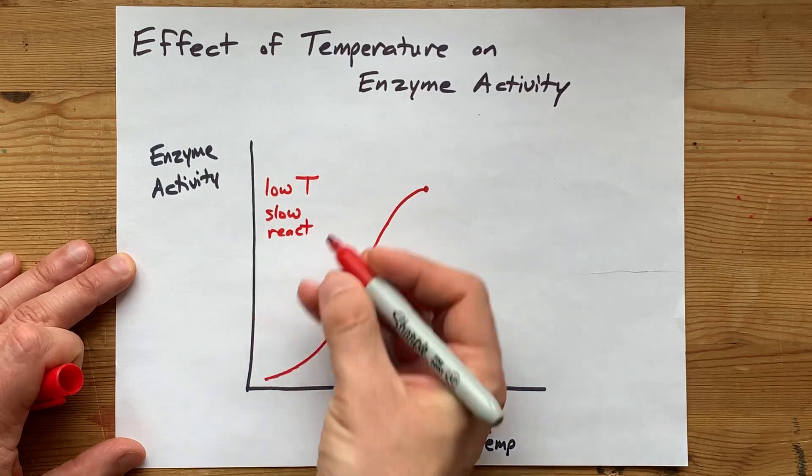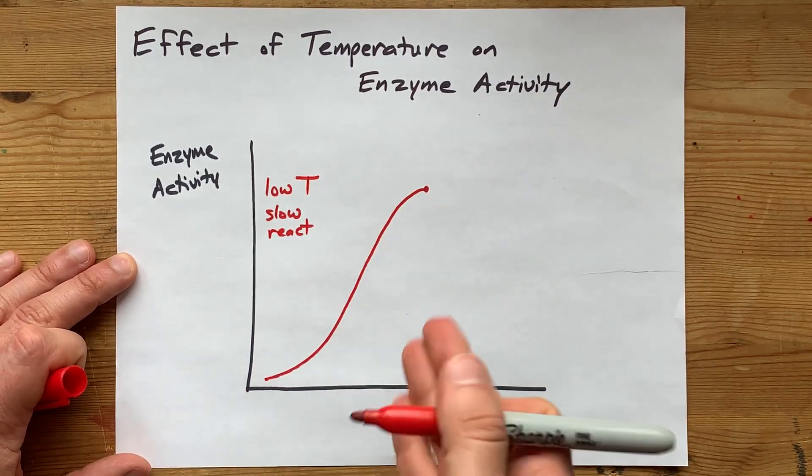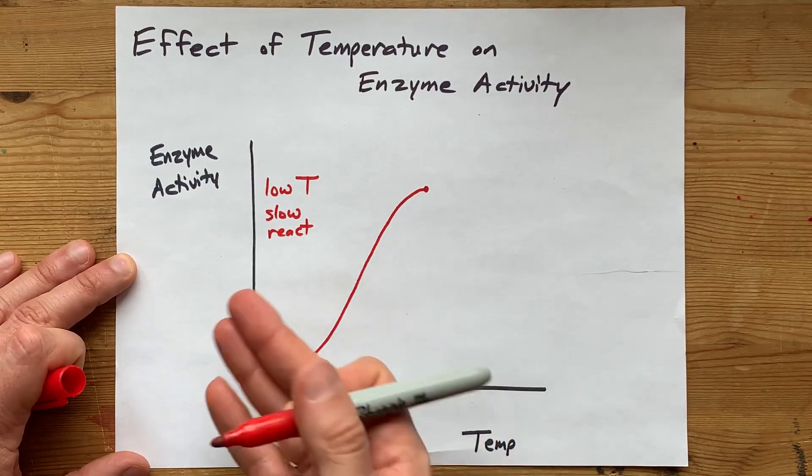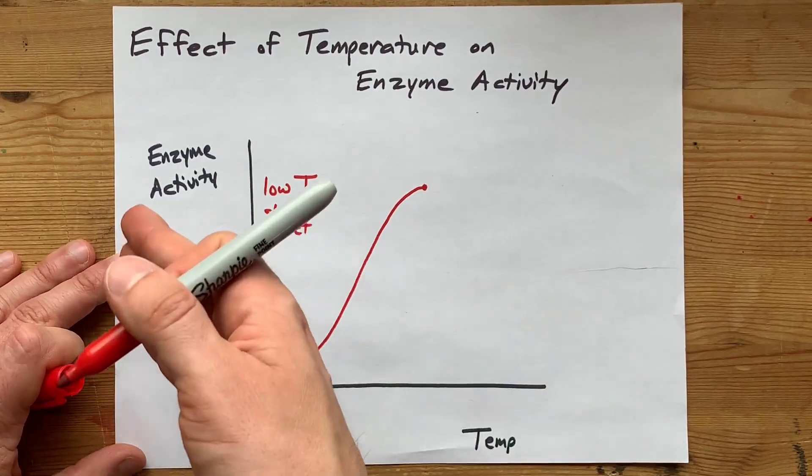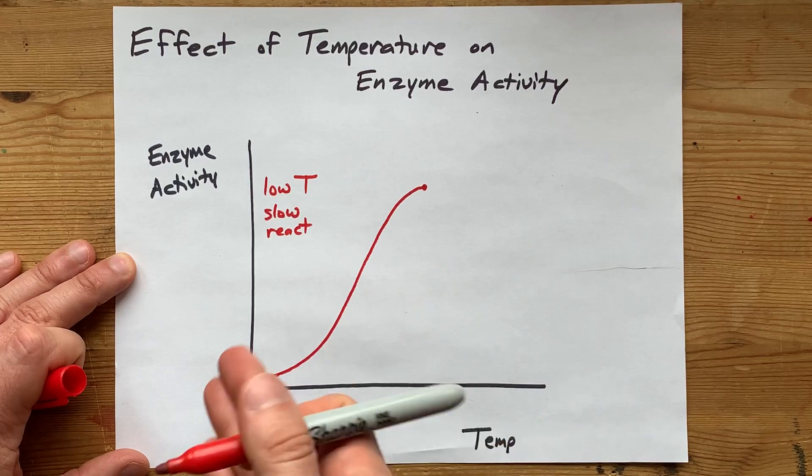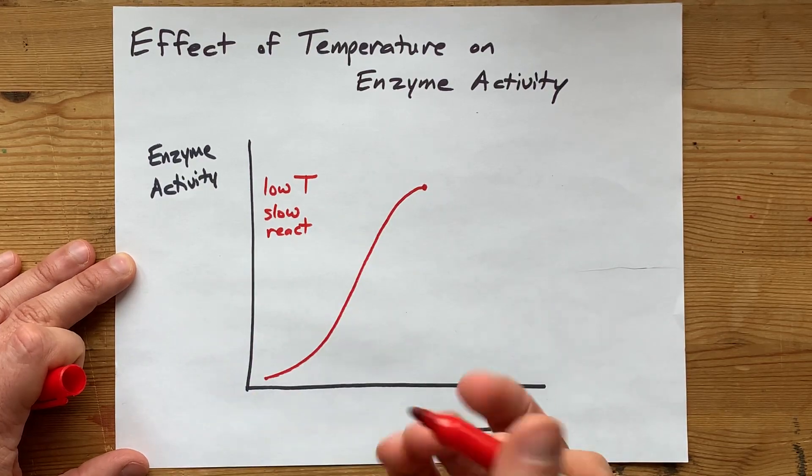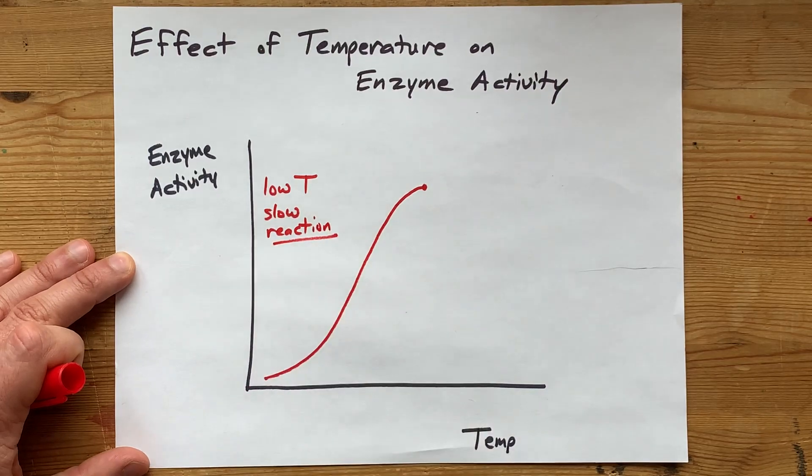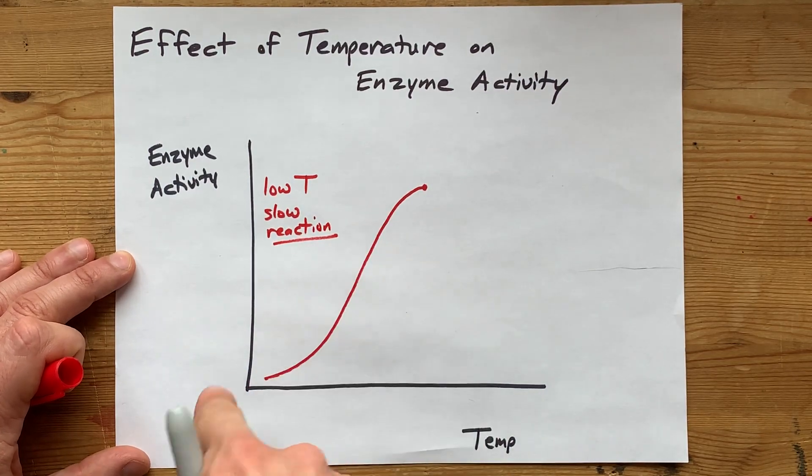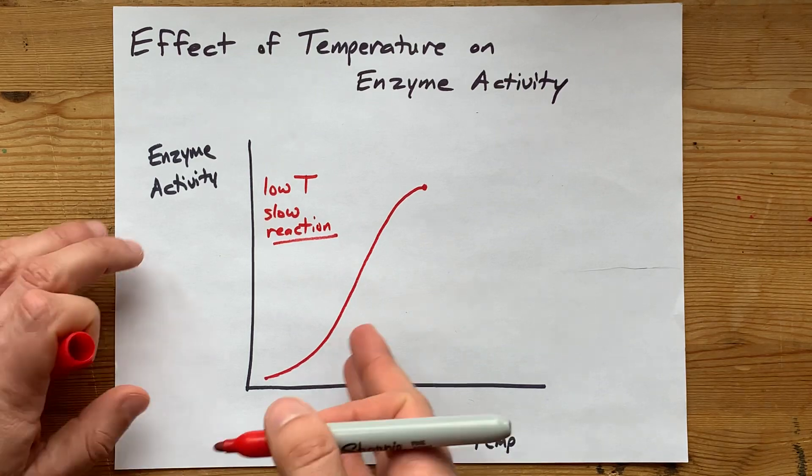That's because temperature affects the kinetic energy of the molecules. The lower the temperature, the slower the molecules are moving, and so the less likely they are to be able to get over the activation energy barrier.